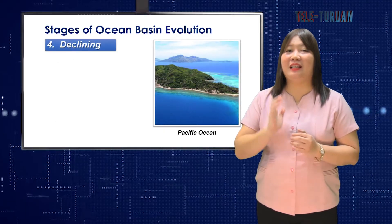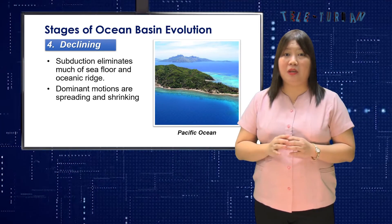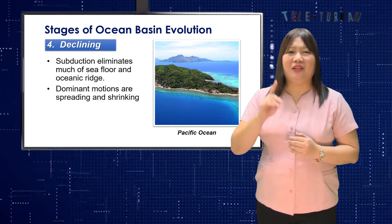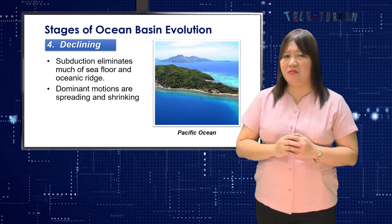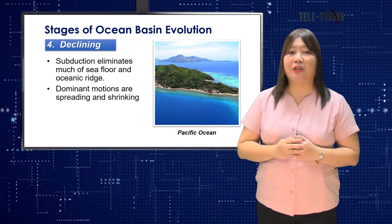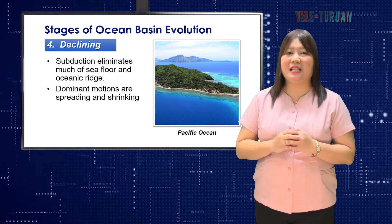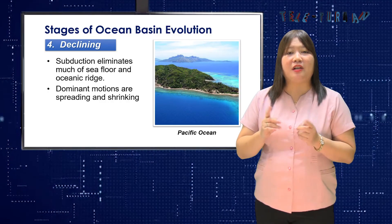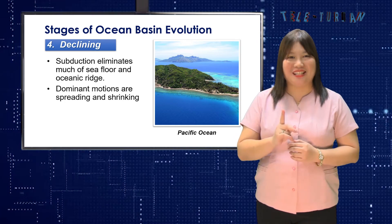Stage 4 is a declining ocean basin, when subduction eliminates much of the seafloor and oceanic rifts. The reason for the formation of new destructive margins probably lies in changing circumstances in another part of the globe, such as continental collision or the initiation of new continental rifting. Dominant motions are spreading and shrinking. An example is the Pacific Ocean.